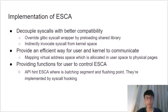There are three keys to constructing ISCA. First, we decouple system calls by overwriting the glibc system call wrapper and indirectly invoke system calls from kernel space. Second, we provide an efficient way for user space and kernel space to communicate by mapping virtual address space allocated in user space to physical pages. Third, we provide functions for users to control ISCA through a new hooking system call that tells ISCA where the entry of the batching point and flushing point is.